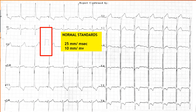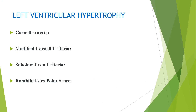Now let's apply the criteria present in the literature for left ventricular hypertrophy. The criteria given in the literature for LVH are the Cornell criteria, the modified Cornell criteria, the Sokolov-Leon criteria, and the Romhild ST point score system.